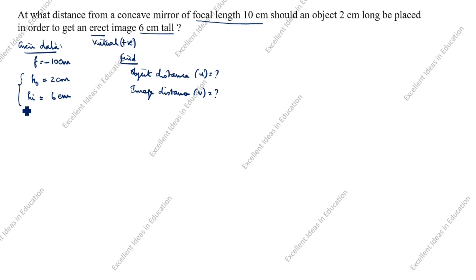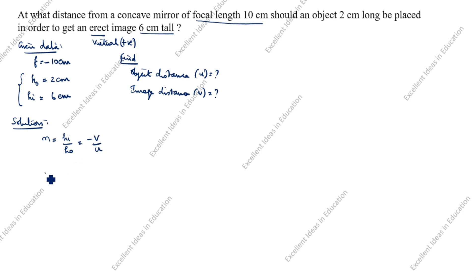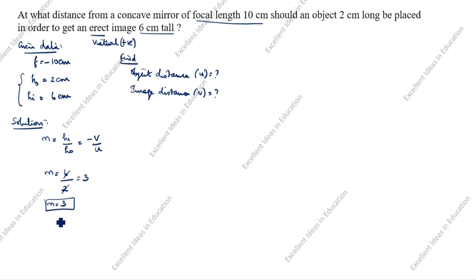We know ho and hi values. Now, the formula for magnification: m = hi / ho = minus v / u. So m = hi / ho = 6 / 2 = 3. So m = 3. The image is virtual, so magnification is always positive for virtual images.